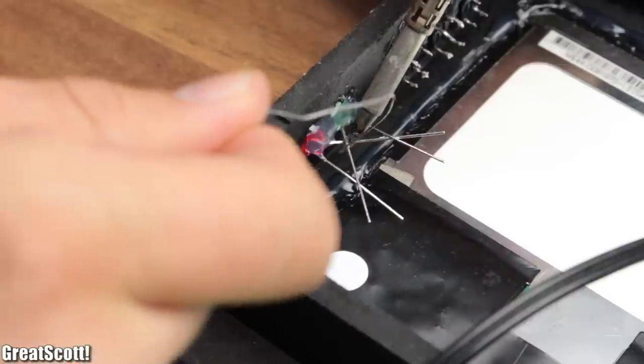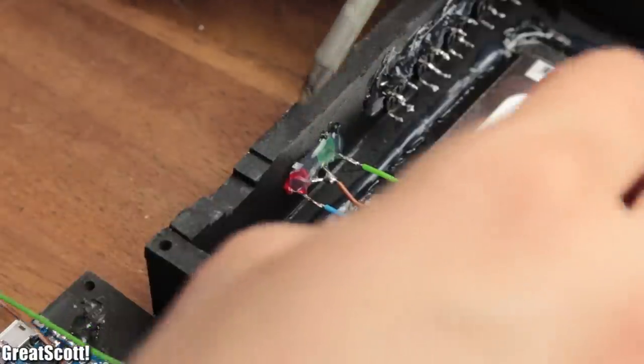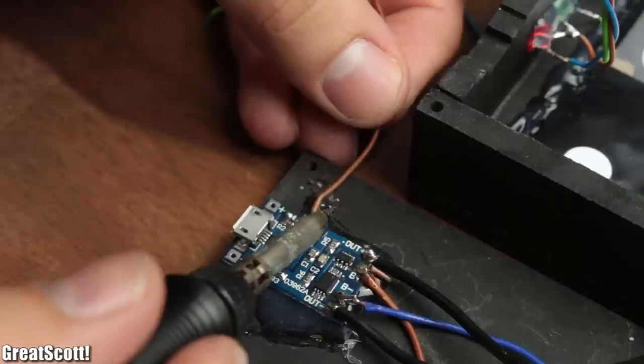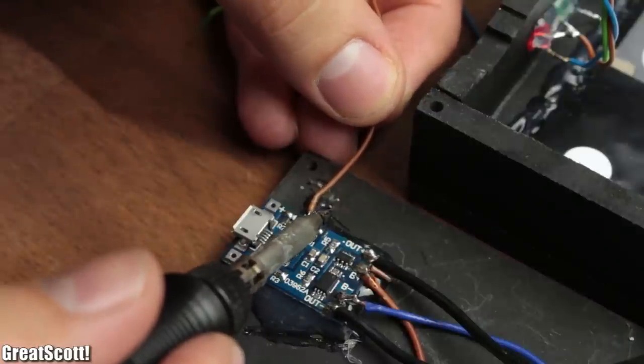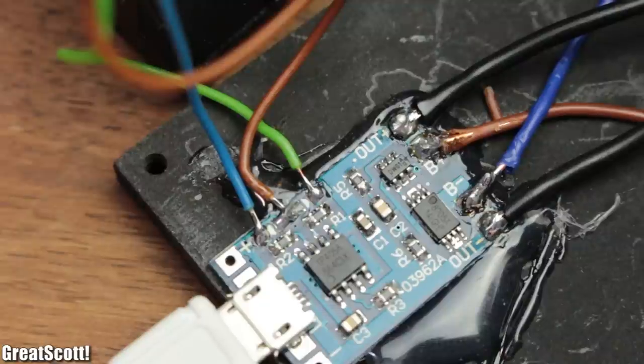Afterwards I connected the anode of the LEDs together and soldered thin flexible wire to each pin. The common anode connects to both middle pads and the green cathode goes to the right pad and the red cathode to the left pad.